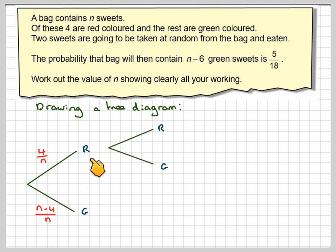Now for the second choice, having got a red one, we can get a red and a green. This one will be 3, but because you haven't put back the first one, there are now n minus 1. And this one, there will still be n minus 4 over n minus 1.